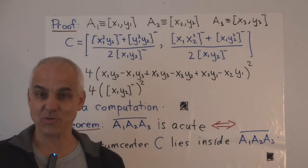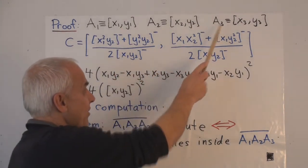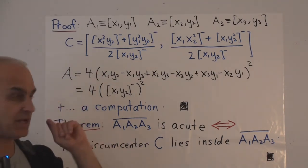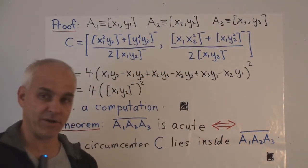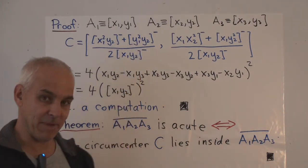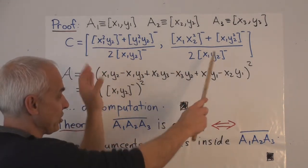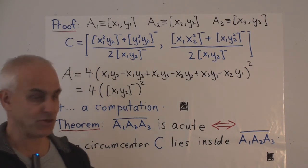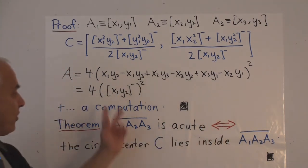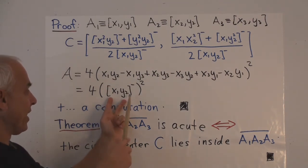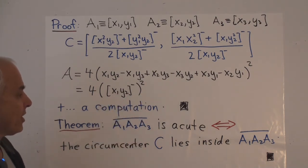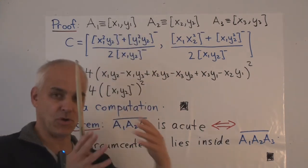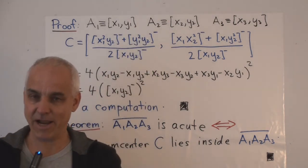The proof of this theorem is an algebraic computation. We start by coordinatizing the three points A1, A2, A3, and use the formula for the circumcenter in terms of anti-symmetric polynomials. Another important ingredient is that the quadria of the triangle can also be expressed in terms of those coordinates as four times a particular anti-symmetric combination squared. Everything then becomes a computation in these six variables showing that the circumcenter equals the corresponding affine combination of the three points.